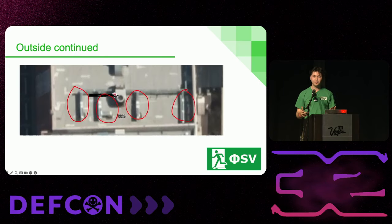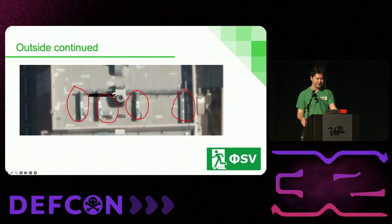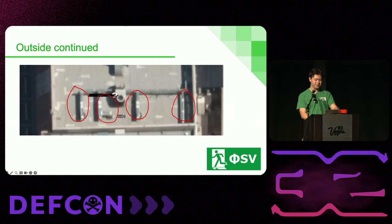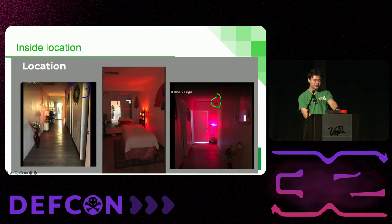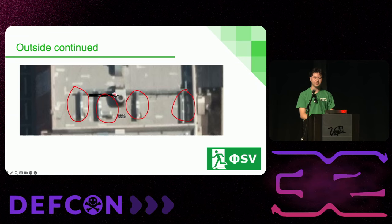For smaller strip malls, you can confirm the number of rooms by looking at HVAC units on the roof — the piping goes to different locations, so approximately you can count how many rooms need to be cooled. In this photo you can see three units visible, with another one behind that's not in frame. That's the value of cross-referencing with different photos.